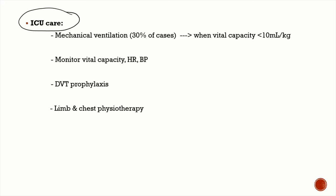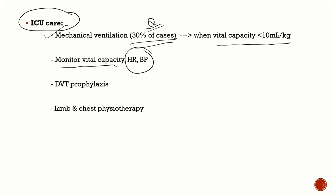GBS supportive management includes monitoring vital capacity — mechanical ventilation is considered when it falls below 10 mL/kg, as 30 percent of patients require it. Continuous monitoring of heart rate and blood pressure is essential due to autonomic instability. DVT and pulmonary embolism prophylaxis with heparin is given due to immobility, along with limb and chest physiotherapy.